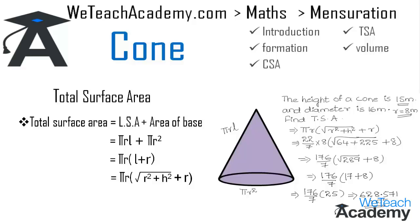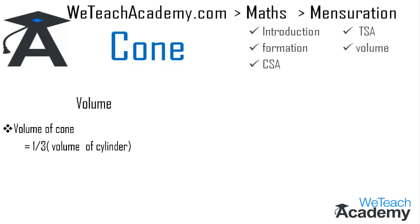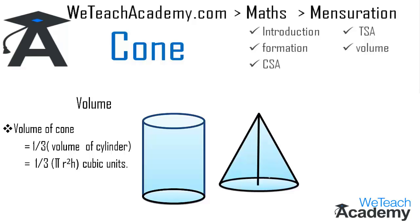Coming to the last section on volume of a cone. Volume is the amount of space inside an object. Volume of cone equals 1/3 of the volume of a cylinder. Here a cylinder and a cone are compared — the volume of the cylinder equals 3 times the volume of the cone. So the formula for volume of cone is: V = 1/3 × πr²h cubic units, where πr²h is the formula for volume of a cylinder.